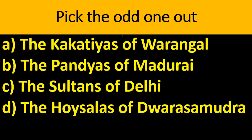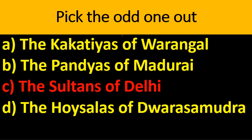Next lesson: Vijayanagara Empire and Bahamani Kingdom. Pick the odd one out — Kakatiyas of Warangal, Pandyas of Madurai, Sultans of Delhi, Hoysalas of Dwarasamudra. The answer is Sultans of Delhi, because the Sultans of Delhi were from North India while the rest were from South India, and options A, B and D were attacked by invaders.